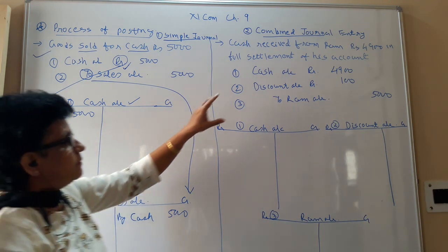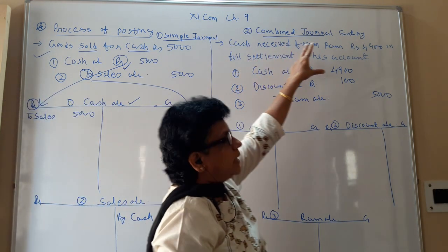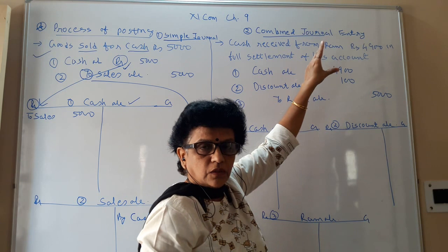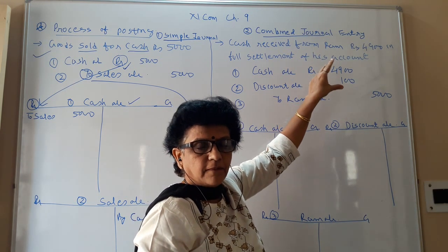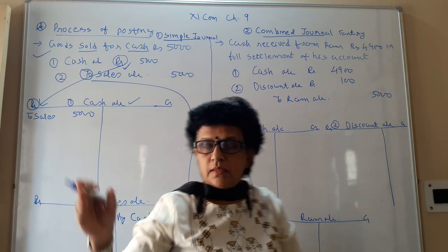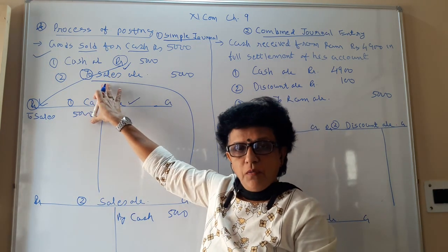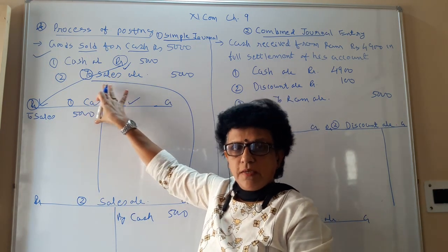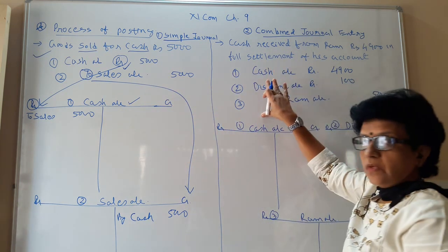Now in the same manner, let us see the combined journal entry. What do you mean by combined journal entry? The journal in which you have more than two accounts. Simple journal means you have only two accounts, two folds. And combined means you have more than two.